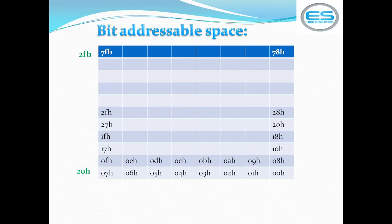If you write the instruction MOV 00h, #25h, it writes a complete byte to that location. But if you write MOV 00h, C — where the carry flag is a single bit — it saves into the bit address of location 20h. The bit address logic checks whether the source content is a single bit or one byte. If it is a single bit, it stores into the bit address locations; if more than one bit, it uses the complete location.